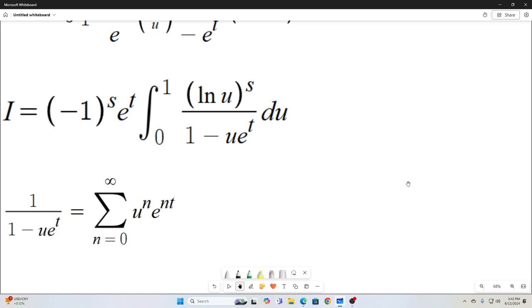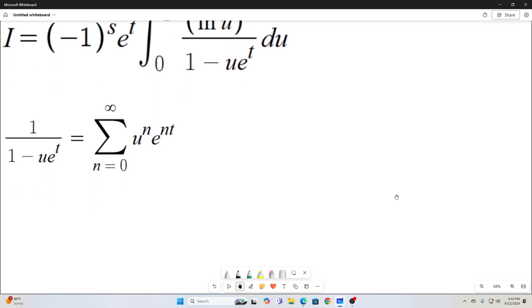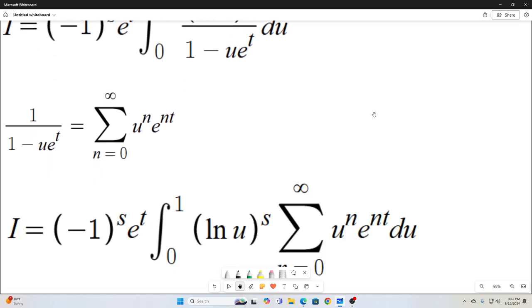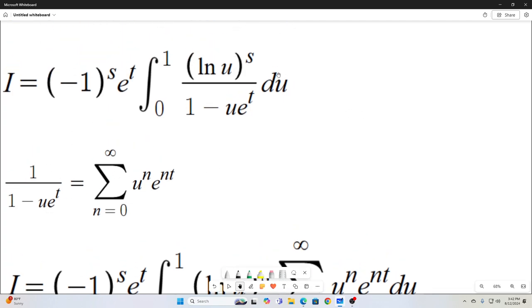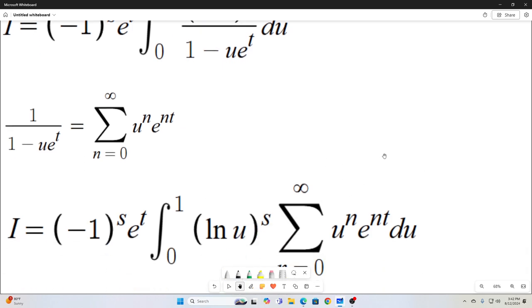All right. And then the next thing we're going to do is recognize the following: that one over one minus u times e to the t is equal to that infinite sum right there. And that's pretty easy to show, using one over one minus x is equal to the sum as n goes from zero to infinity of x to the n, where we just replaced our x with u e to the t. All right. So no problem there. And next we just replace this, which is right here with this. And this is what we end up getting.